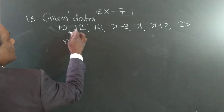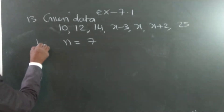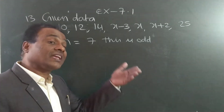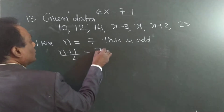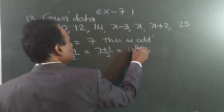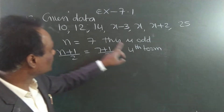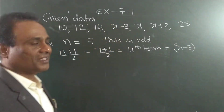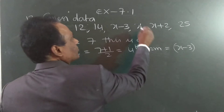How many terms are there? 7 — an odd number. In the previous case it was even. When the number of terms is odd, use the formula n plus 1 by 2. That is 7 + 1 by 2 = 8/2 = 4th term. The 4th term — counting 1, 2, 3, 4 — is x minus 3. So this is the median.